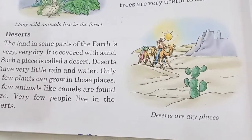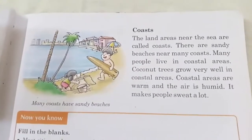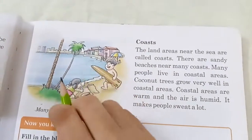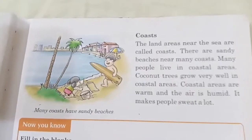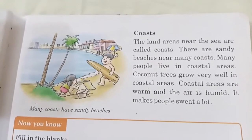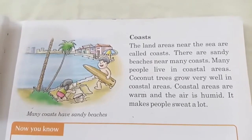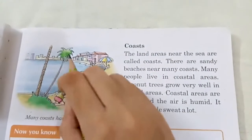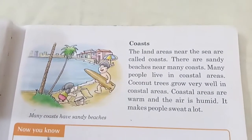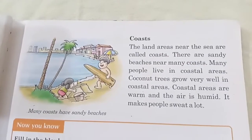Now come to the coast. The land which is present near the sea is called a coast area. Many sandy beaches are present in this area. Many people live here. Coconut trees are grown here. Coastal areas are warm and the air is humid, which makes people sweat a lot.